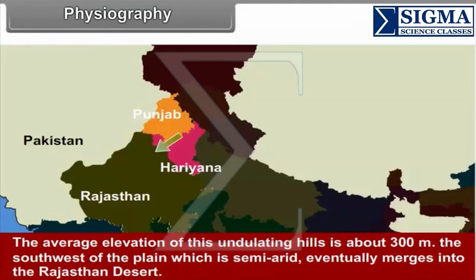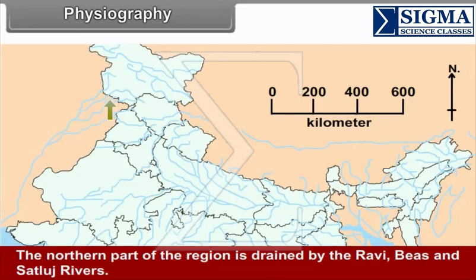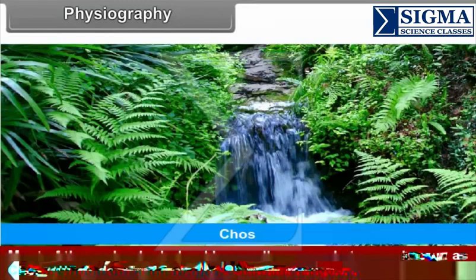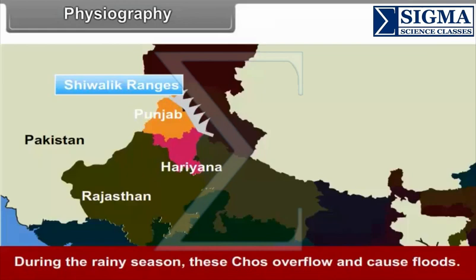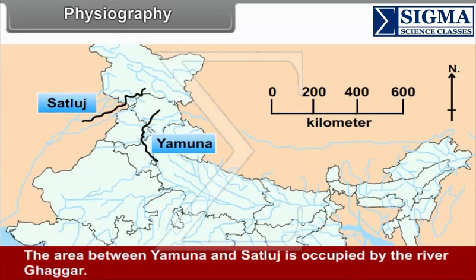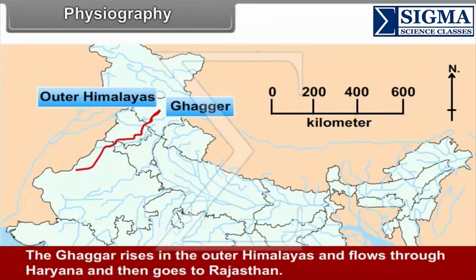The south-west of the plain, which is semi-arid, eventually merges into the Rajasthan desert. The northern part of the region is drained by the Ravi, Beas and Sutlej rivers. Most of the region is drained by small seasonal streams known as choes, which descend from the Shivalik ranges. During the rainy season, these choes overflow and cause floods. The area between the Yamuna and Sutlej is occupied by the river Ghaggar, which rises in the outer Himalayas and flows through Haryana and then into Rajasthan.